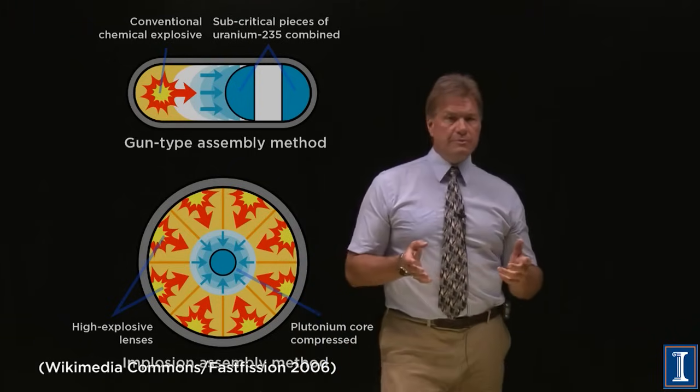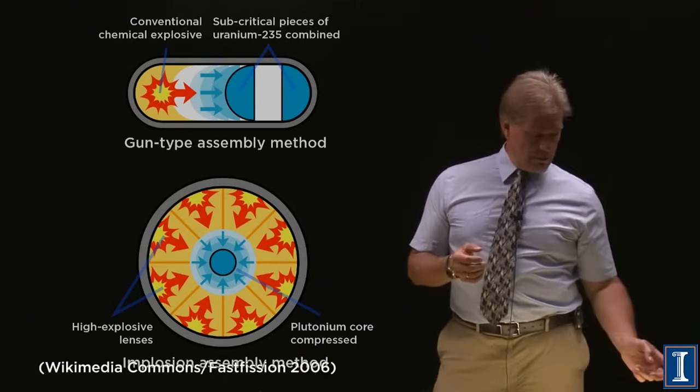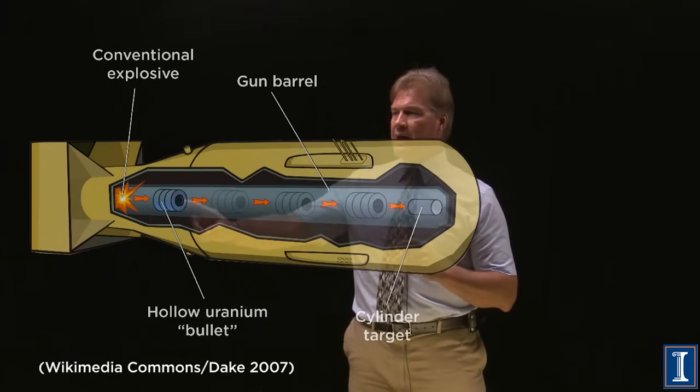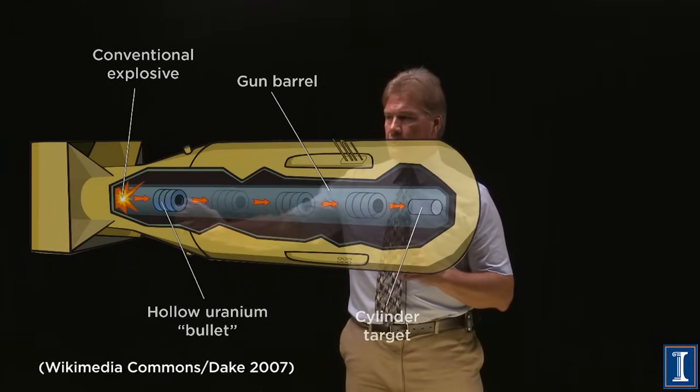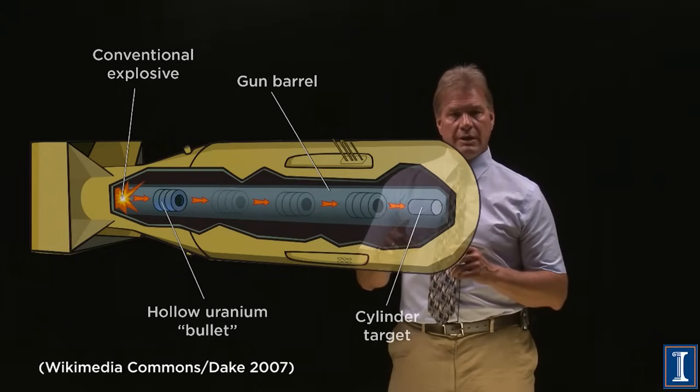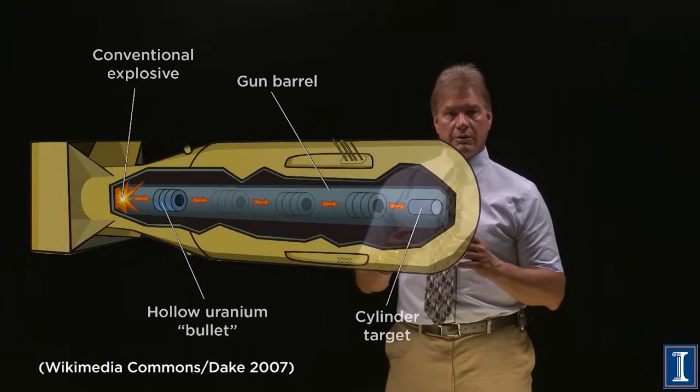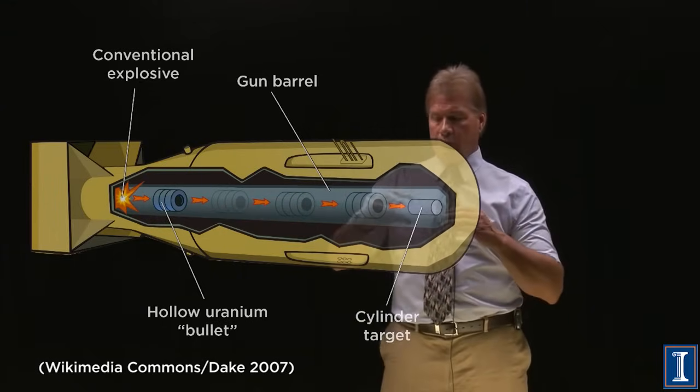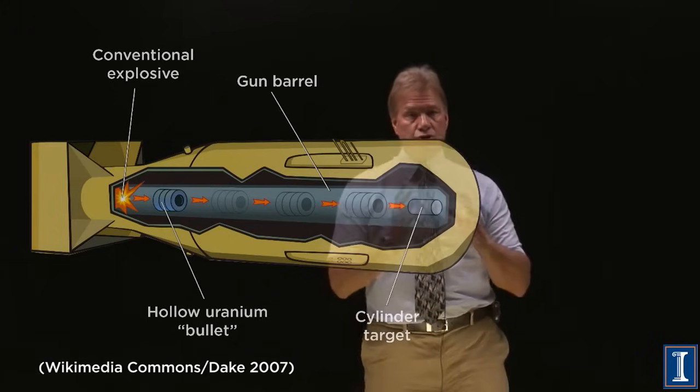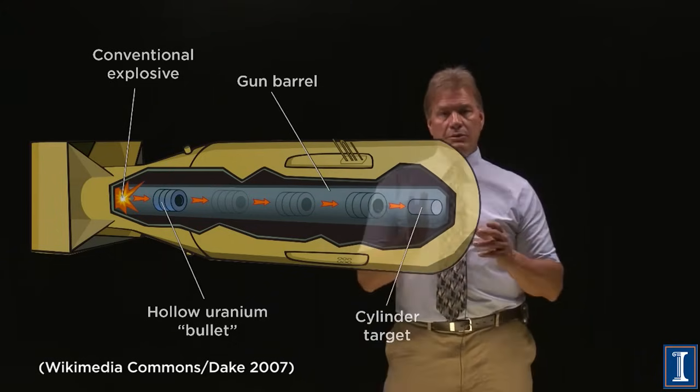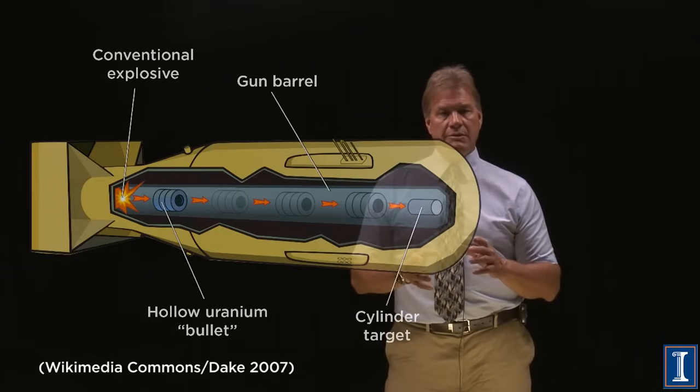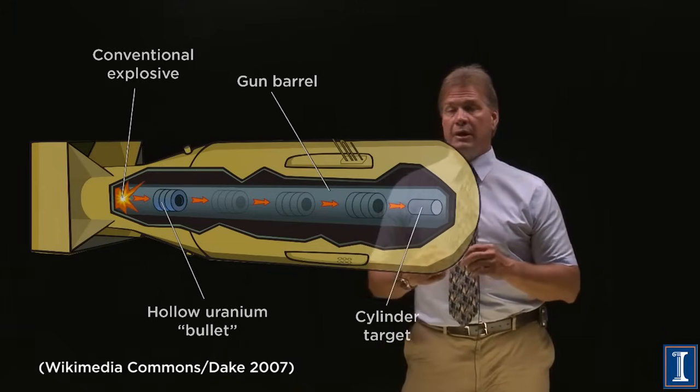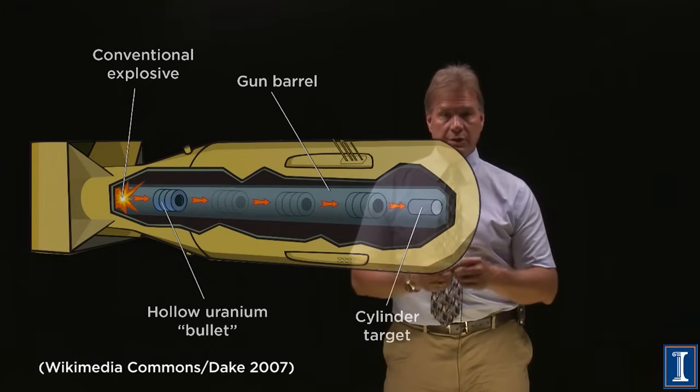So the very first bomb used this gun type method. And it wasn't really two halves. You can see you have this hollow cylinder, subcritical. And then you have this cylindrical target here, also subcritical. And you basically, like a gun, shoot this so that it will come and go over the top of it. And you might say, isn't it going to keep going? Sure. But we only need microseconds for this chain reaction to start up and go all the way to completion. Meaning you have the uncontrolled release of the nuclear energy.